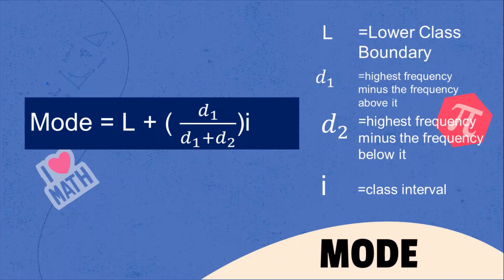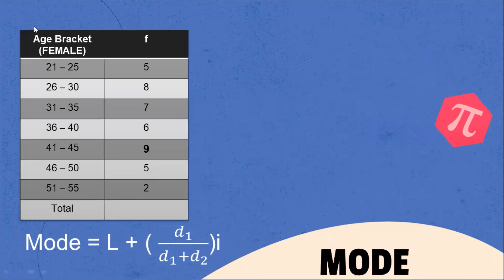Let's start to solve the mode of the given example. There are five females aged 21–25, eight females aged 26–30, seven females aged 31–35, six females aged 36–40, nine females aged 41–45, five females aged 46–50, and two females aged 51–55.